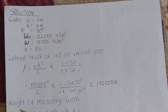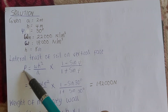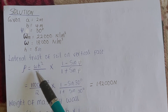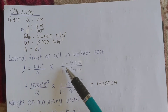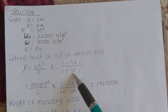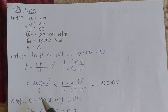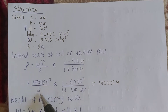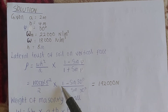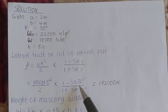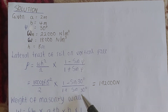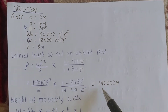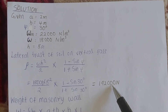The lateral thrust P equals the unit weight of soil multiplied by height squared, all over two, multiplied by (1 minus sine of the angle of repose) over (1 plus sine of the angle of repose). Substituting: 18,000 × 8² / 2 × (1 − sin 30°) / (1 + sin 30°). When you calculate that, you get 192,000 Newtons. That is the lateral thrust of the soil on the vertical face.